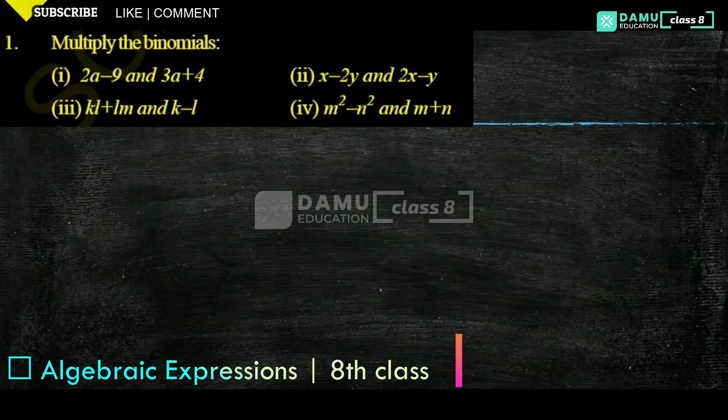Our third one is: what is that is (kl + lm) into (k - l).